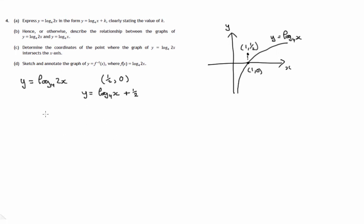So let's now look at the graph y equals log to the base 4 of 2x. We know it crosses at a half 0 and we know that it passes through the point 1 a half. So there's the point 1 a half and there's the point a half 0. So that's y equals log to the base 4 of 2x.